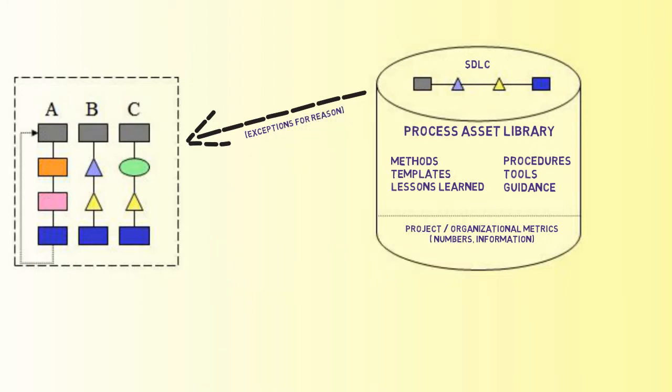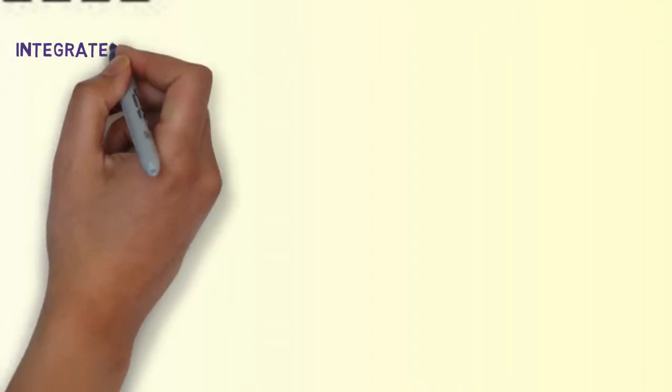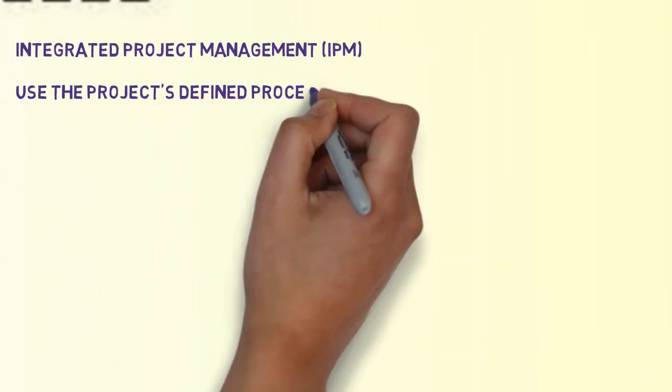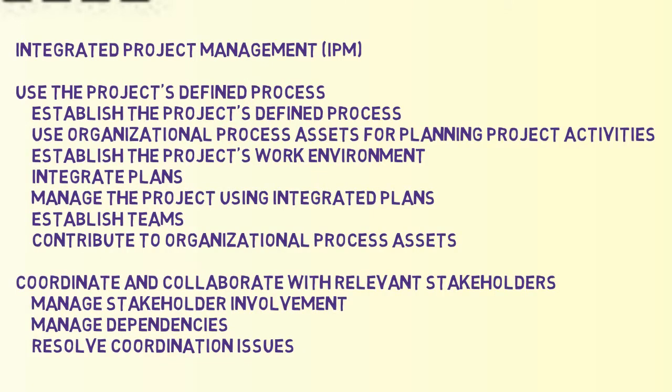This storehouse, or process asset library, is pretty useless unless it's used. The integrated project management process area focuses on using the assets in the storehouse to define a process for that project based on the set of life cycles, techniques, processes, and sub-processes, templates, and the like, so that the project can best meet specific customer requirements or constraints.